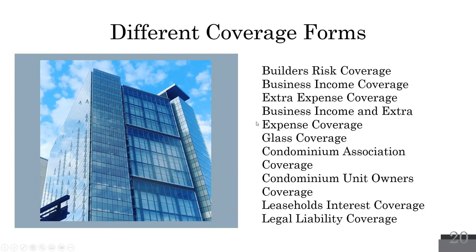Glass coverage — on the broad form, commercial property covers $100 per window with a $500 maximum. That's not enough for a building with many windows. By buying glass coverage, all windows are covered on an all-risk basis. Each window is lettered, numbered, and itemized showing its exact position on the building — it's attached to the declaration page. Glass coverage covers everything except fire, because fire losses are already covered by your property policy.